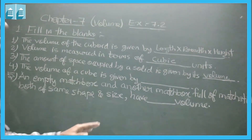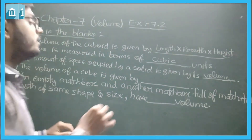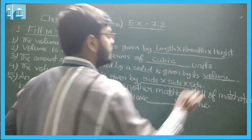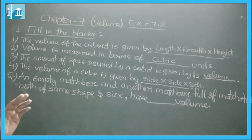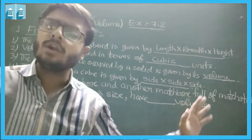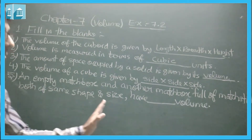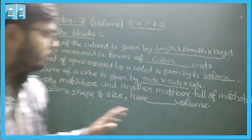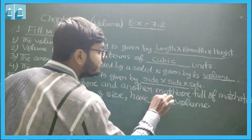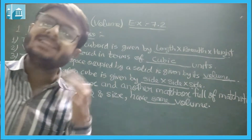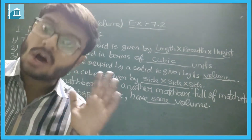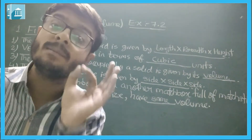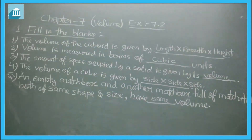The volume of a cube is given by side cubed. Now the fifth and last fill-in-the-blank: an empty matchbox and another matchbox which is full of matchsticks — both have the same shape and size. Their volume will be the same, because the amount of space inside both matchboxes, which have the same shape and size, will be equal. So these five fill-in-the-blanks are now done.